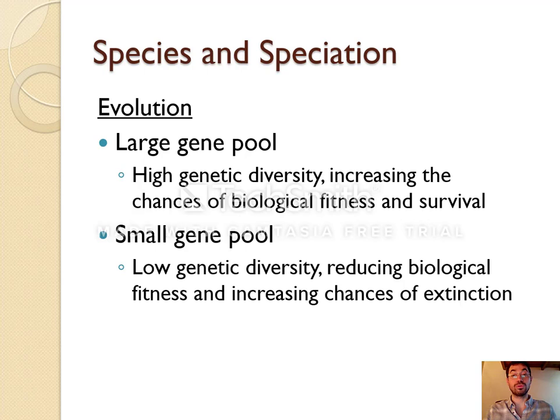Larger gene pools tend to have higher genetic diversity, which increases the chance of survival. Smaller gene pools have less diversity, which means that if the environment changes, there is less possible variation for natural selection to choose. If there's less variation, then potentially a big change could kill all individuals.